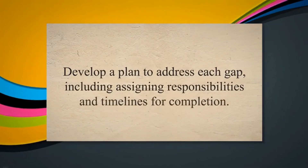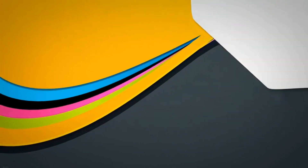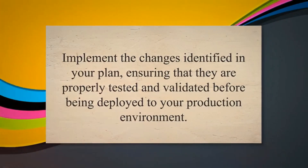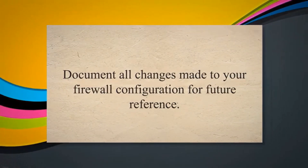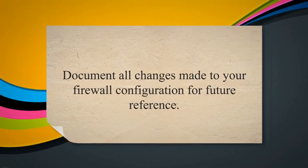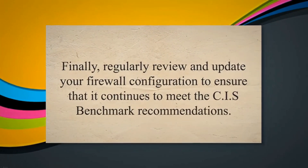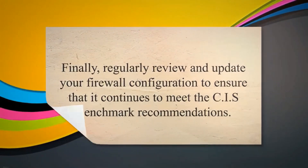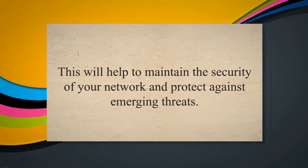After identifying the gaps, prioritize them based on their severity and potential impact on your network security. Develop a plan to address each gap, including assigning responsibilities and timelines for completion. Implement the changes identified in your plan, ensuring they are properly tested and validated before being deployed to your production environment. Document all changes made to your firewall configuration for future reference, and regularly review and update it to ensure it continues to meet the CIS benchmark recommendations.